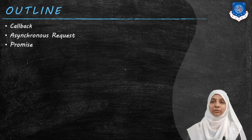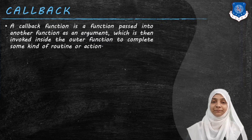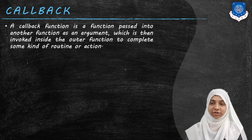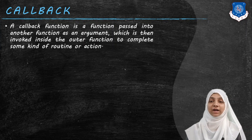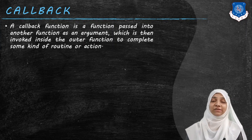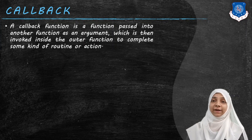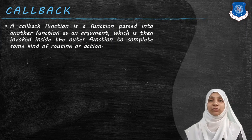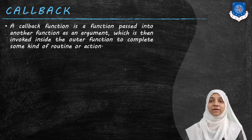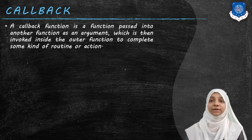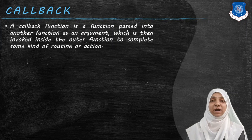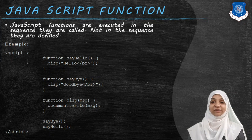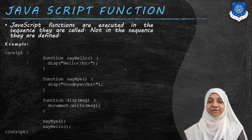In today's video we are going to study what are the callbacks, what is a synchronous request, and what are the promises. A callback is simply a JavaScript function which is passed to another function as an argument, which is then executed inside the outer or calling function to complete some kind of routine or action. Instead of calling two different functions separately, we make a call to only one function, and within that function we pass one more parameter — the name of another function which must get executed as part of the first calling function.